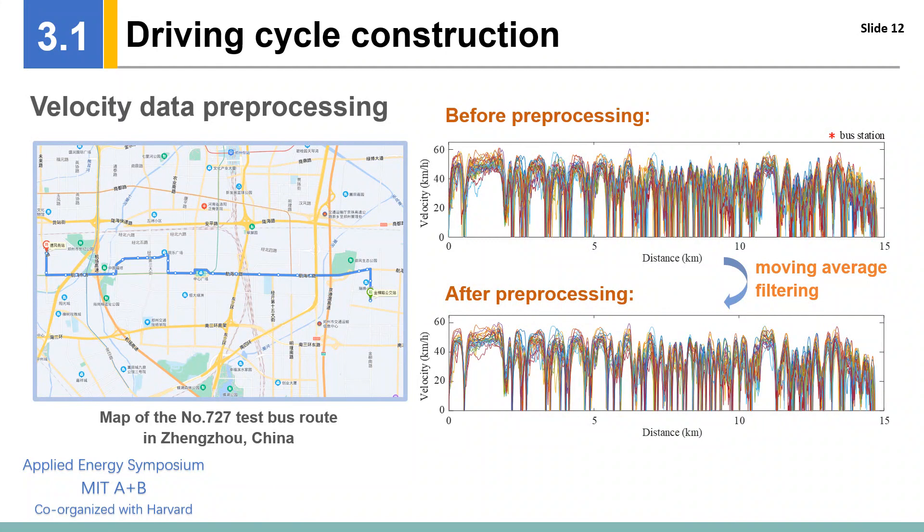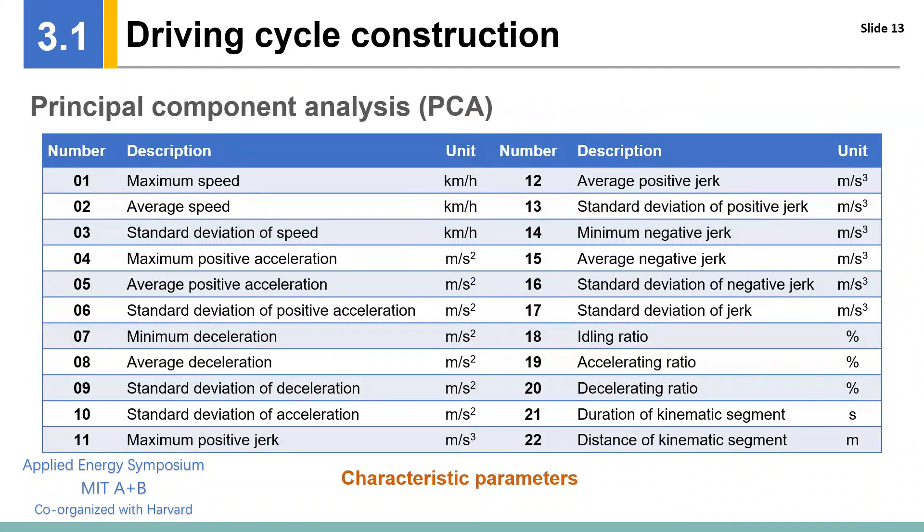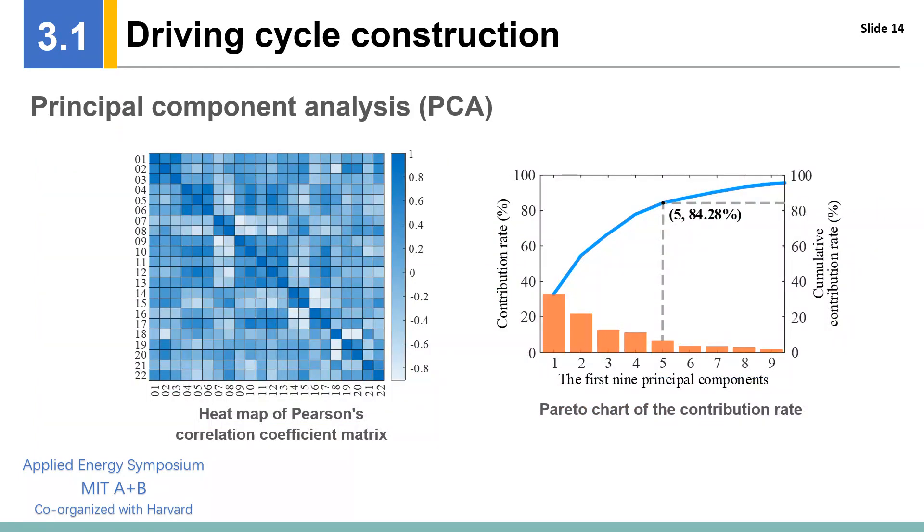The well preprocessed velocity data are used to divide the kinematic segments. The velocity segment between each two adjacent bus stations is regarded as a kinematic segment. All velocity profiles can be divided into 672 segments. And then, in order to fully excavate the characteristics of each segment, 22 characteristic parameters are selected to calculate the characteristic of each kinematic segment.